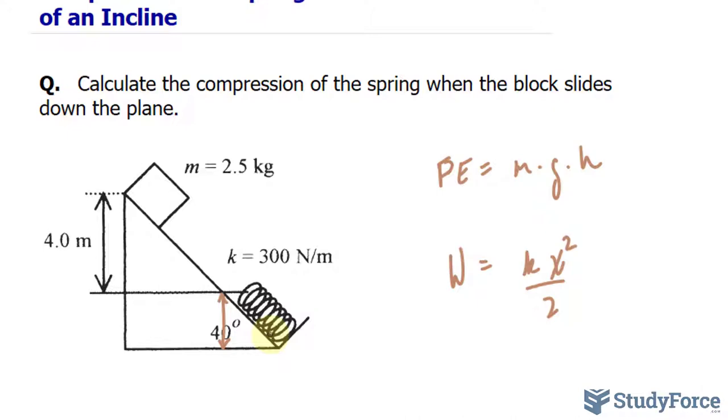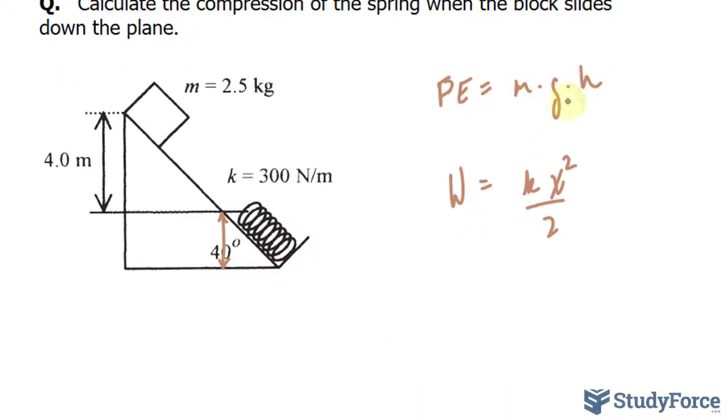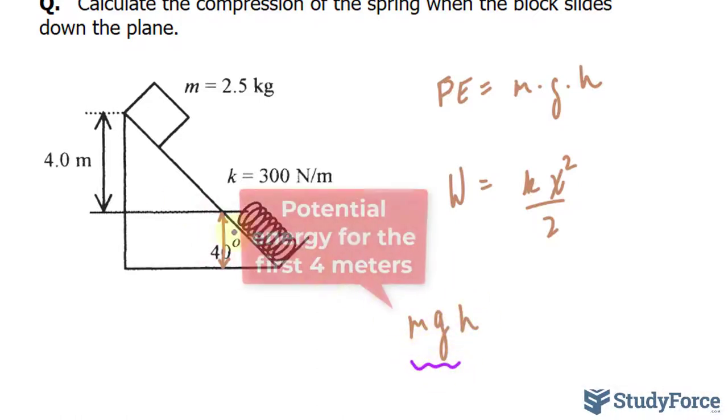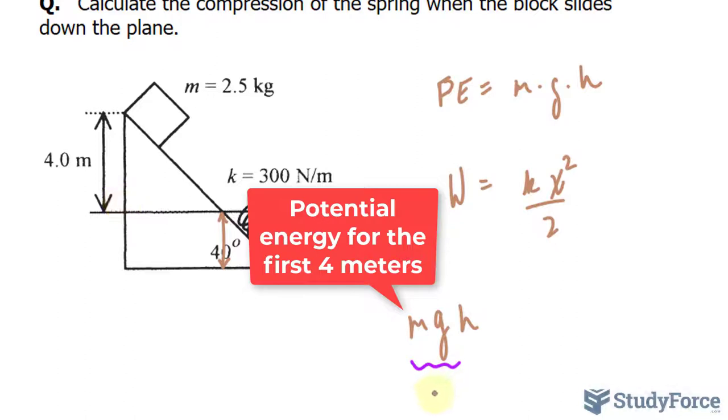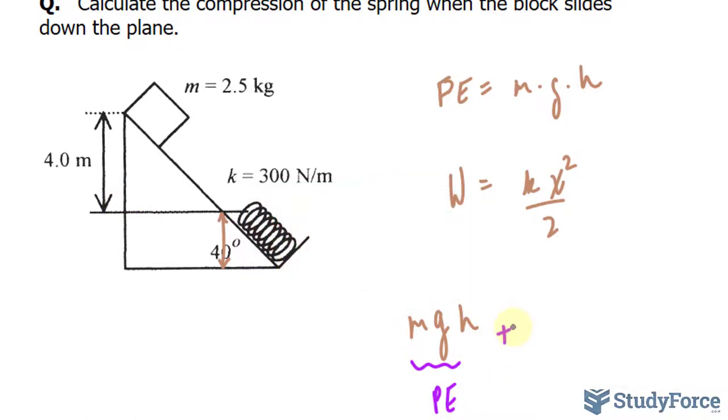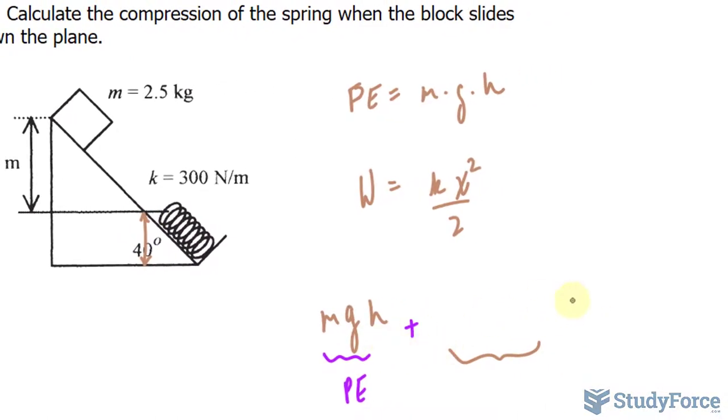If that's confusing to you, here's what I mean. So I'll take this expression, mgh. That's the potential energy from here to here. And we'll add it to another expression that represents the potential energy from here to the bottom. Whatever that is equal to then gets equal to the work required to compress the spring, which is found using that expression, kx squared over 2.